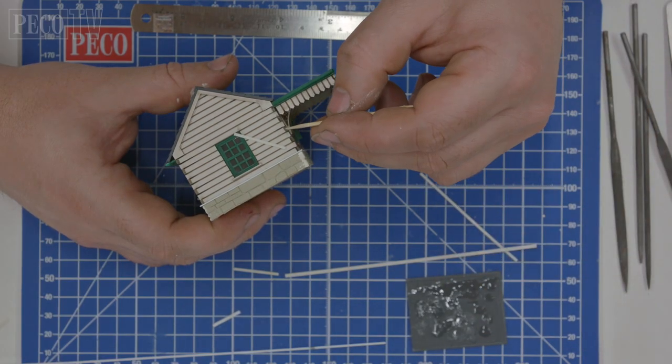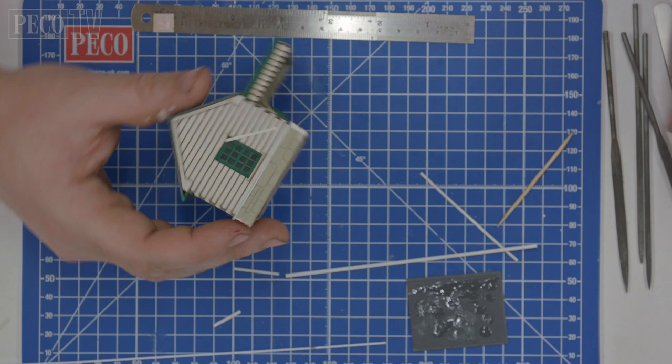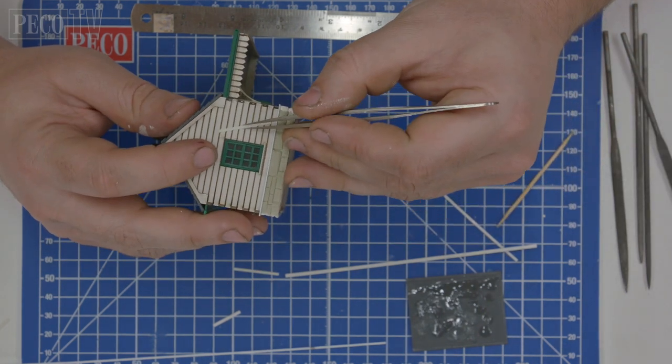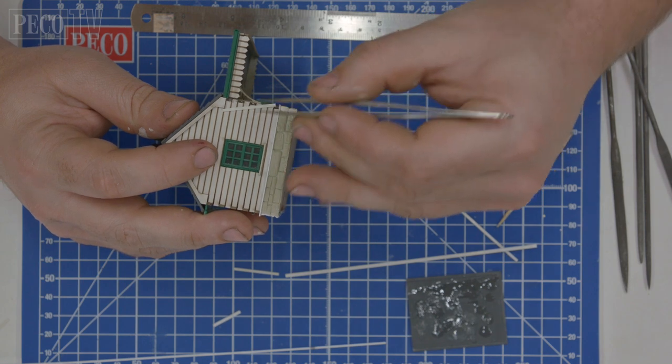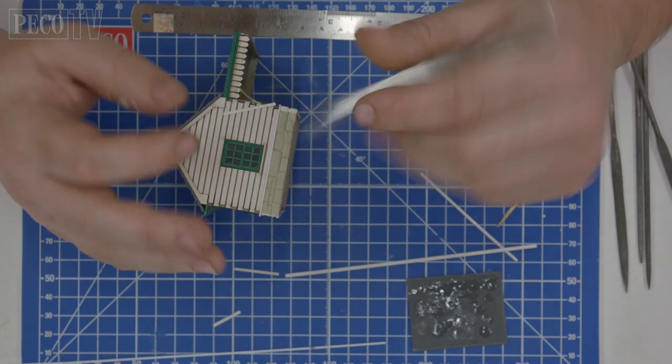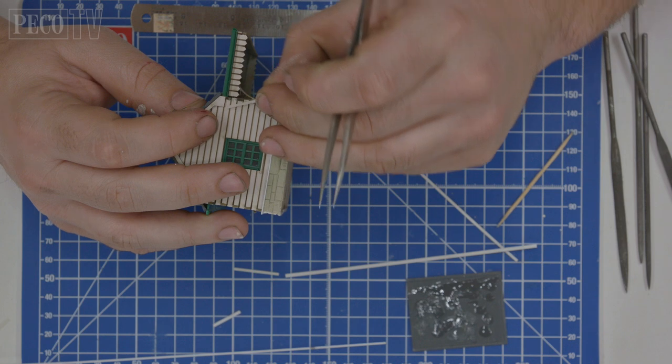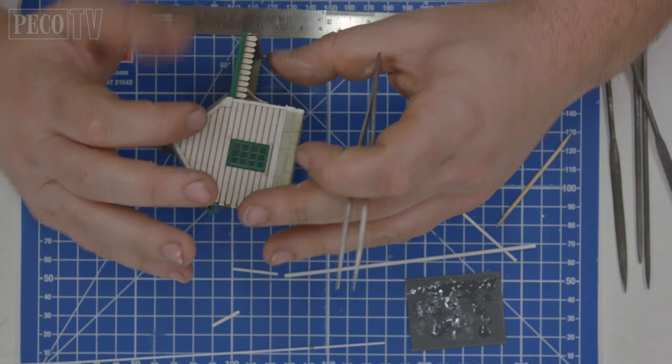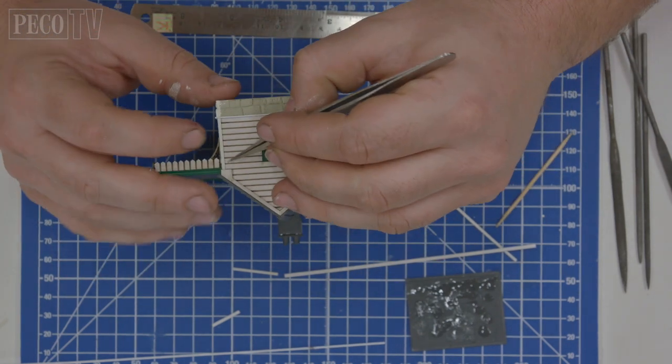Using 1.3mm microstrip measure and cut to length for the wooden uprights found on the corners of your station building. Then carefully glue them into place using super glue. You have to be quite quick and precise but be sparing with the amount of super glue you use.